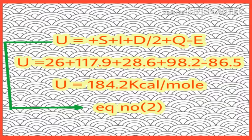Lattice energy U is equal to S + I + D/2 + Q - E. Equation number 2: U = 26 + 117.9 + 28.6 + 98.2 - 86.5, that is equal to 184.2 kcal per mole.